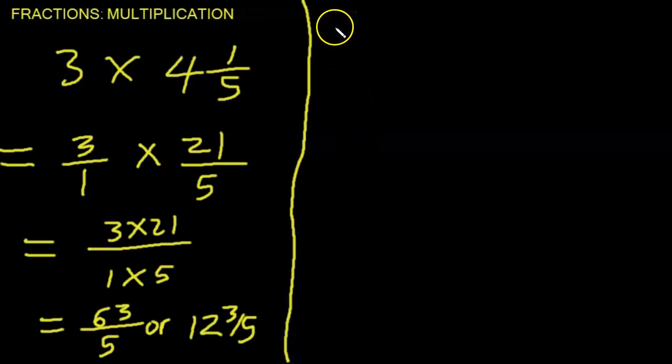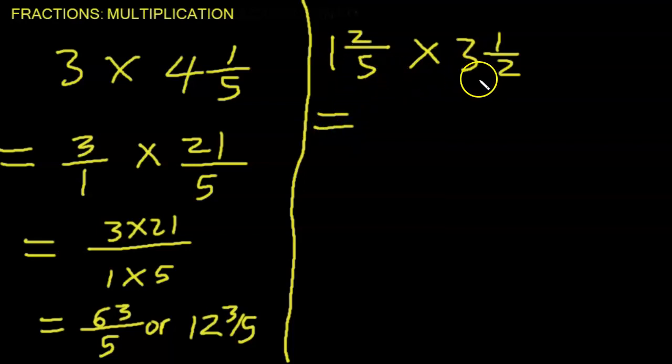But if we have something like 1 and 2 fifths times 3 and 1 half, again, the best way to go about this is to always convert the mixed fractions into improper fractions.